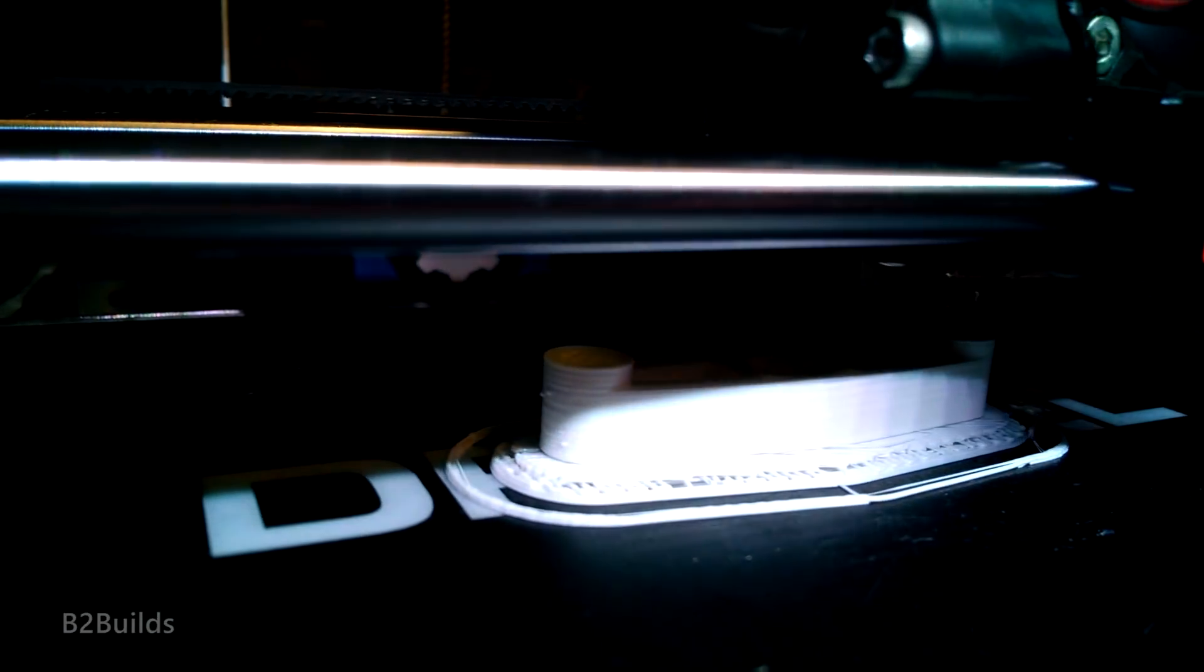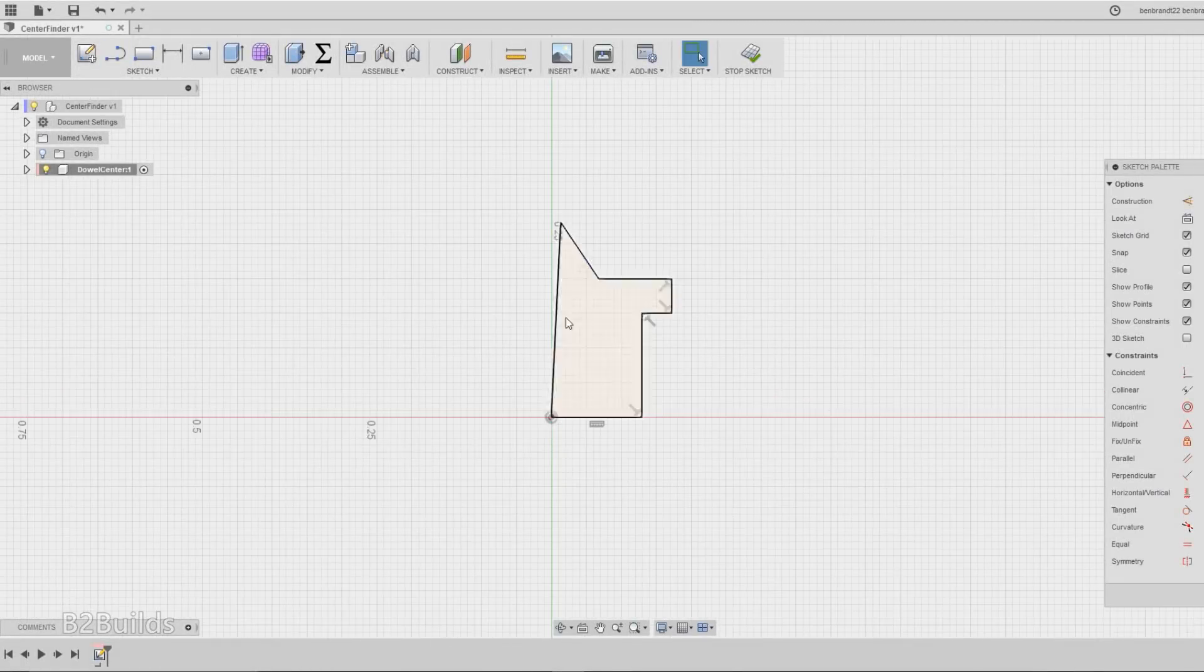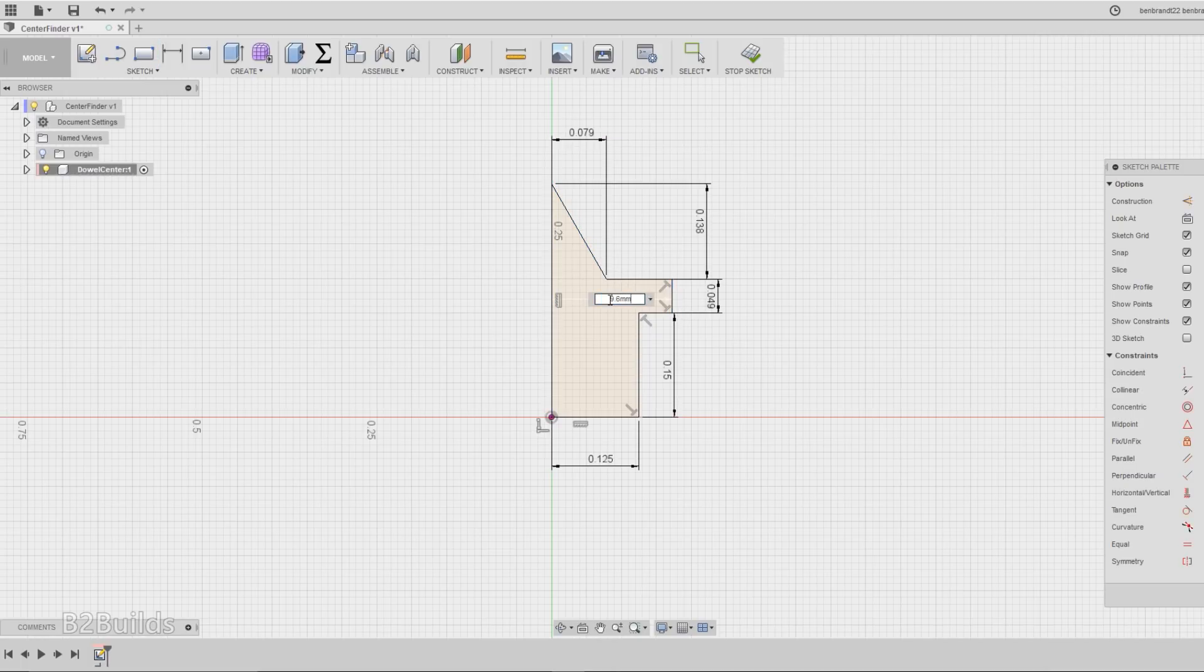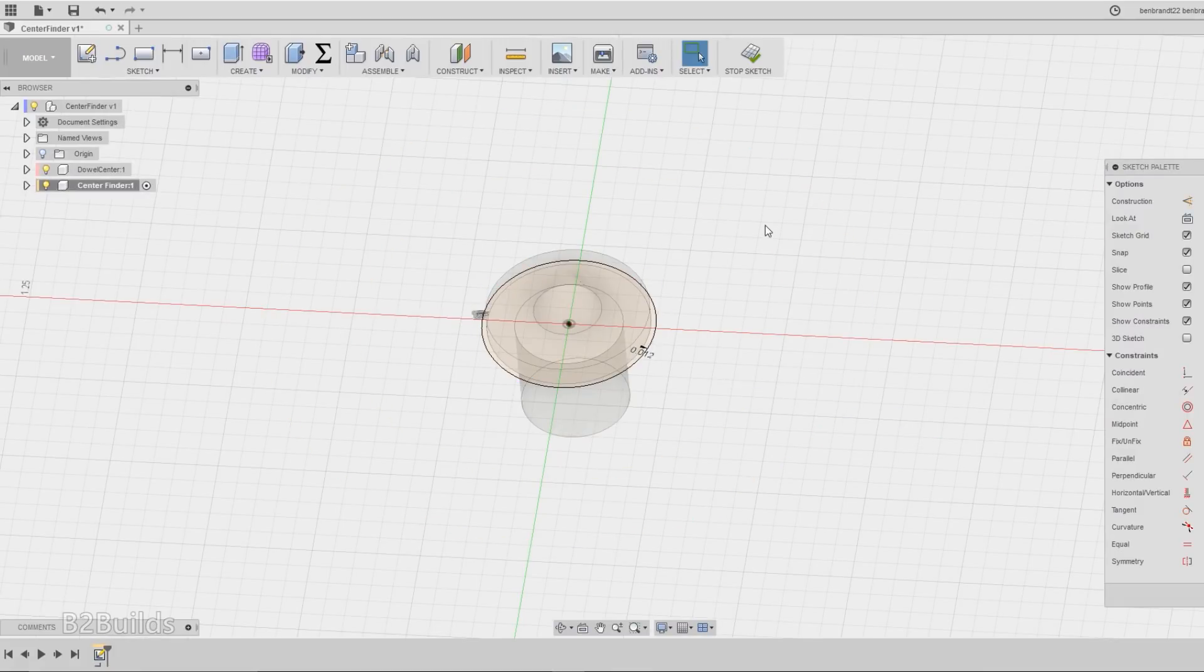I started off by taking some careful measurements of my quarter inch dowel center and created a model of the dowel center itself, sketching out the profile and creating a revolved shape from that.